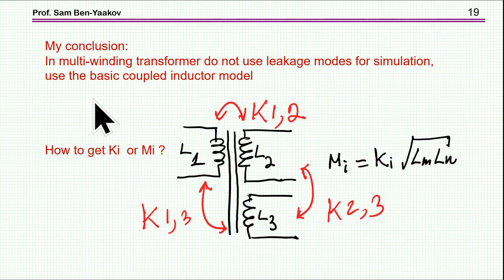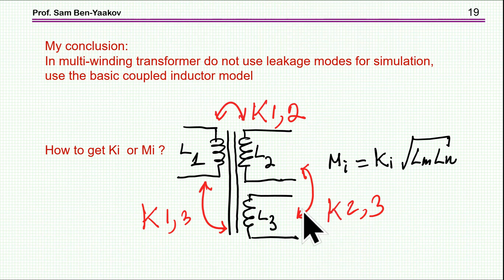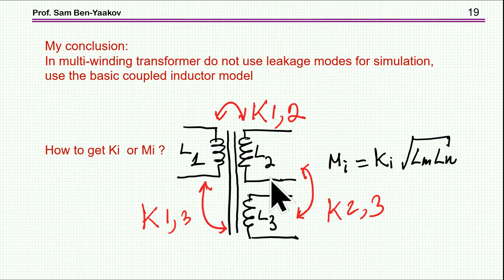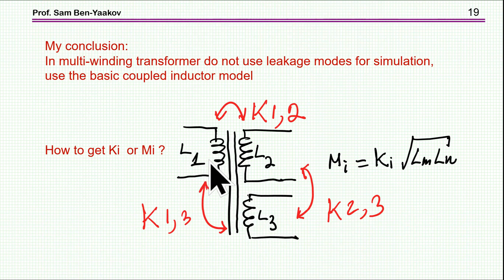My conclusion is that in the case of a multi-winding transformer, do not use leakage models for simulation. Use the basic coupled inductor model. We are not very used to it because we are used to looking at the leakage, but it is worthwhile to get used to the very basic generic model. Once you work with it, you'll get used to it, it operates like any other model, and it gives accurate results because this is the physics of the system. This is not an equivalent circuit which breaks down in the multi-winding case — it's fine for a two-winding case, but for more than two windings you have to incorporate the coupling between the other windings, which you cannot do with a very simple model.